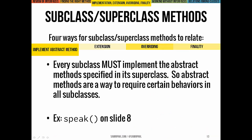There are four ways that methods in a subclass can relate to methods in a superclass. The first is implementation of an abstract method: every subclass has to implement any abstract methods in its superclass. Abstract methods are really a way of requiring certain behavior in subclasses. A good example is the speak method we saw in Animal, Dog, and Lion.